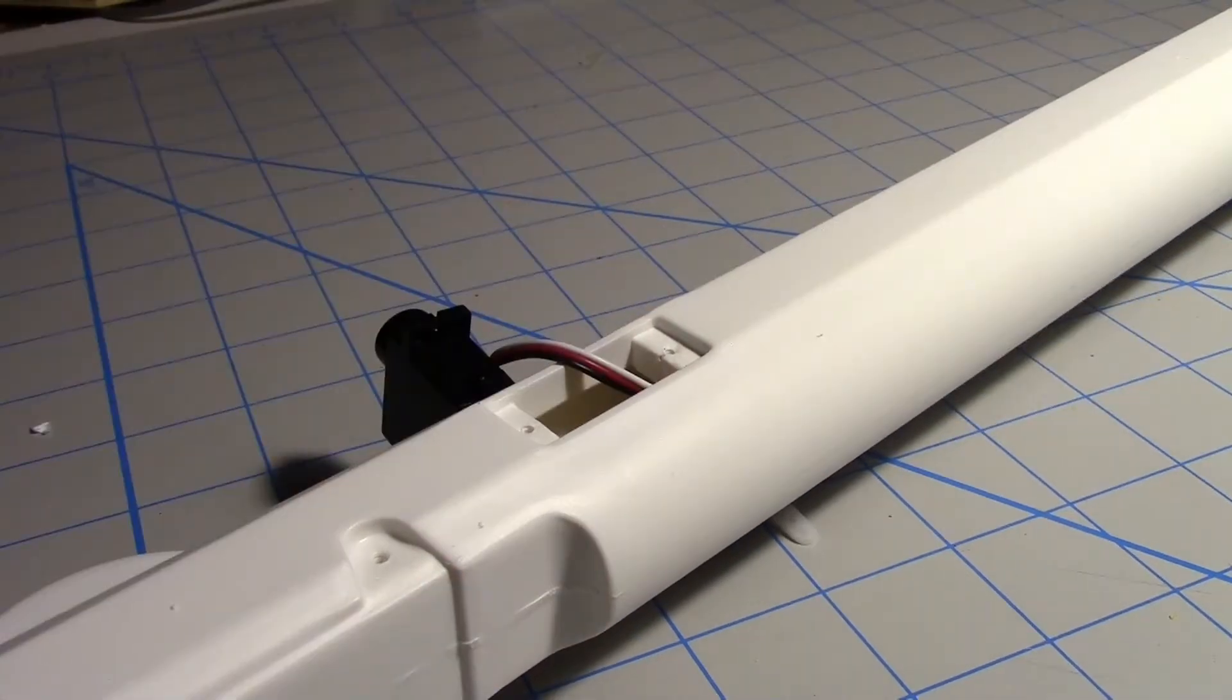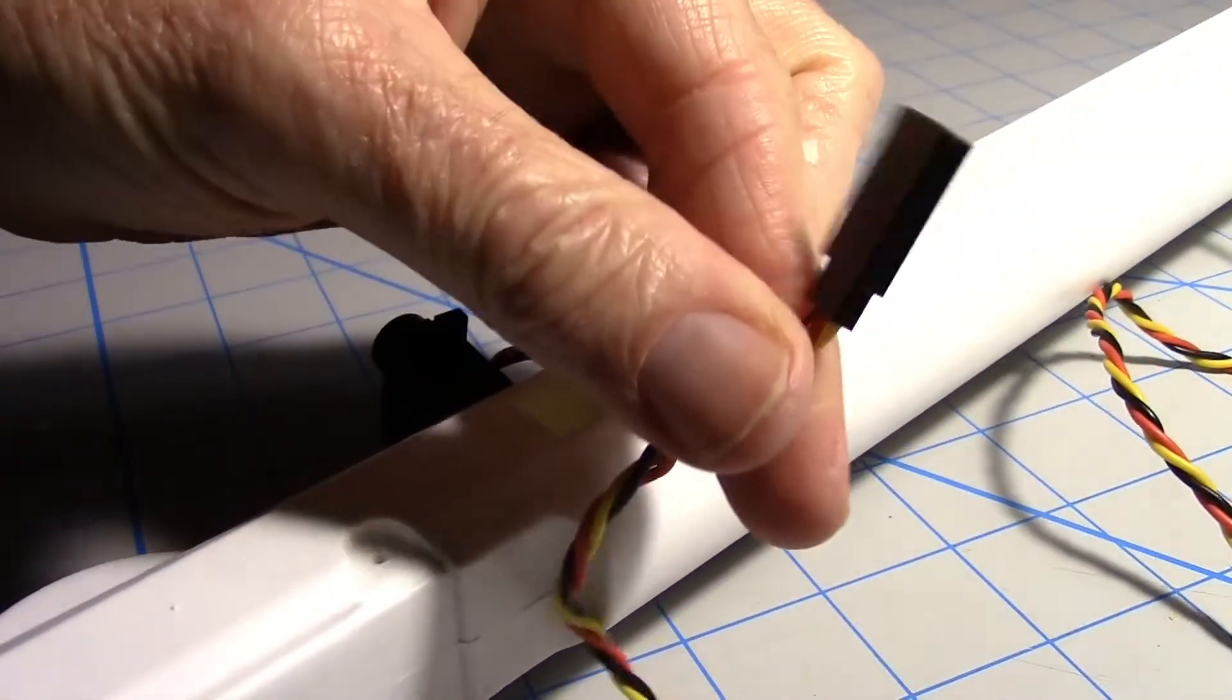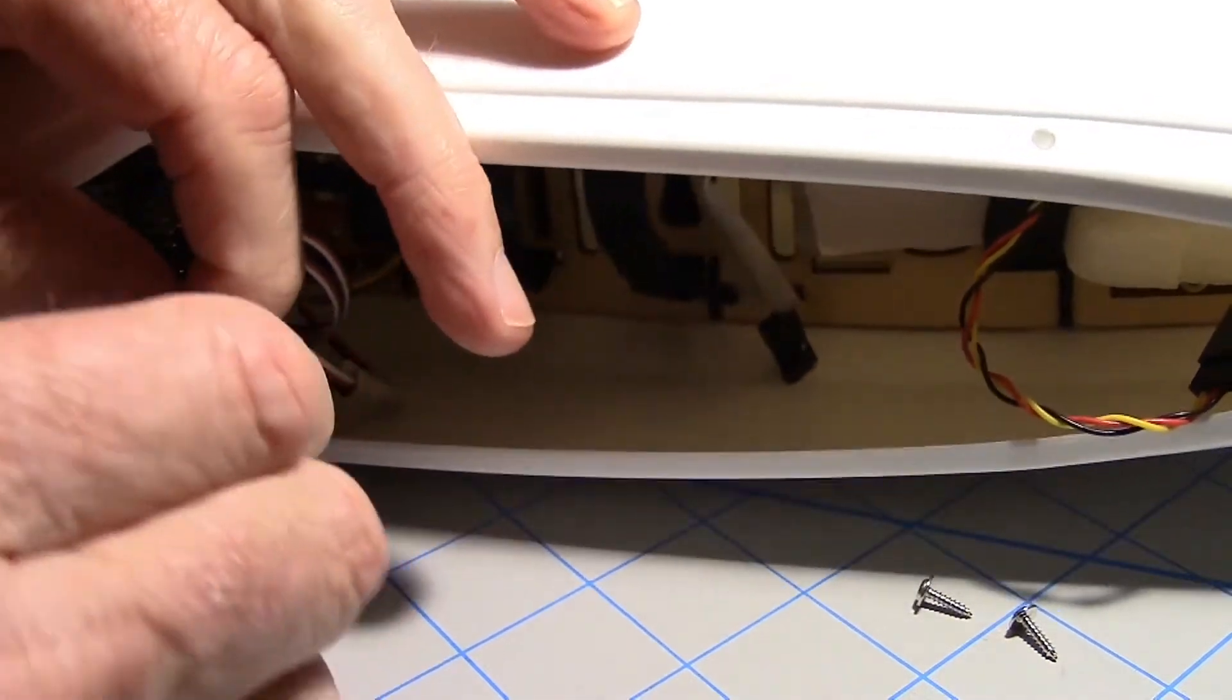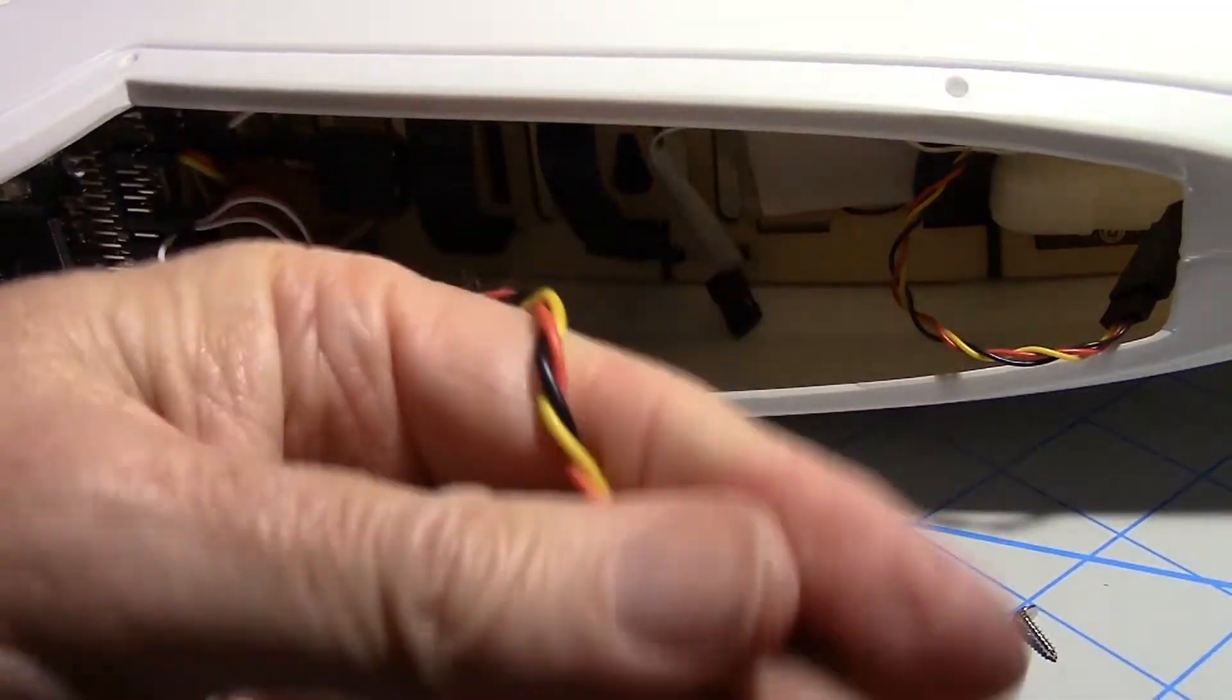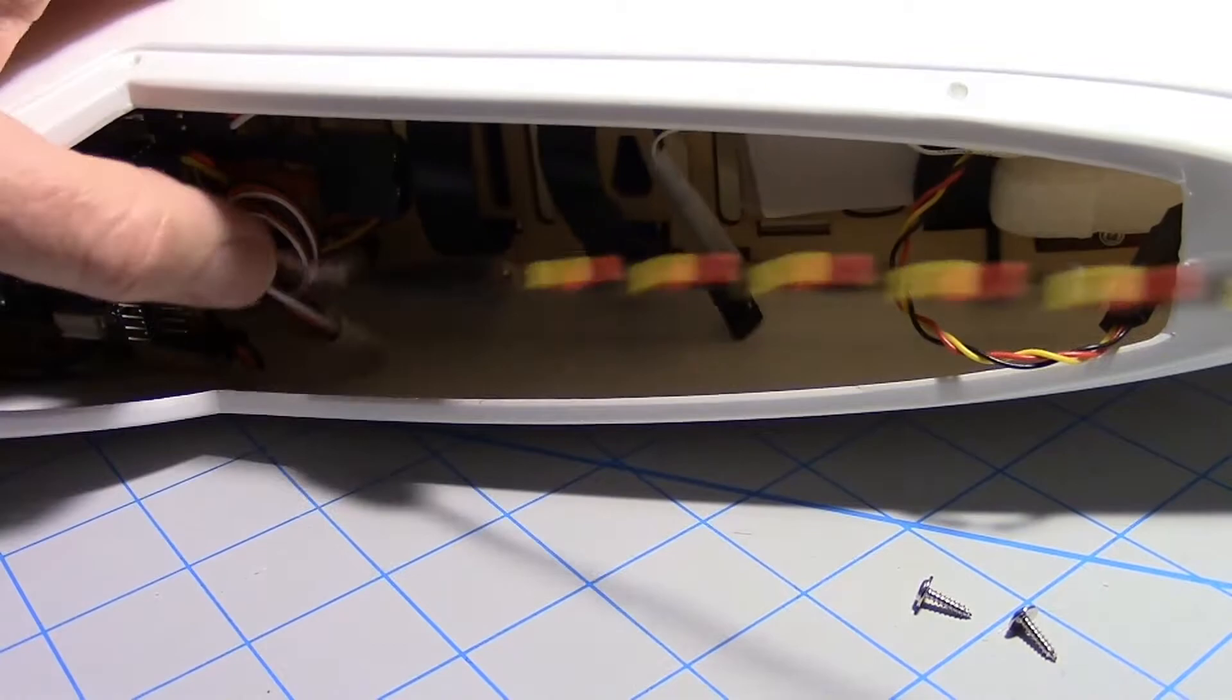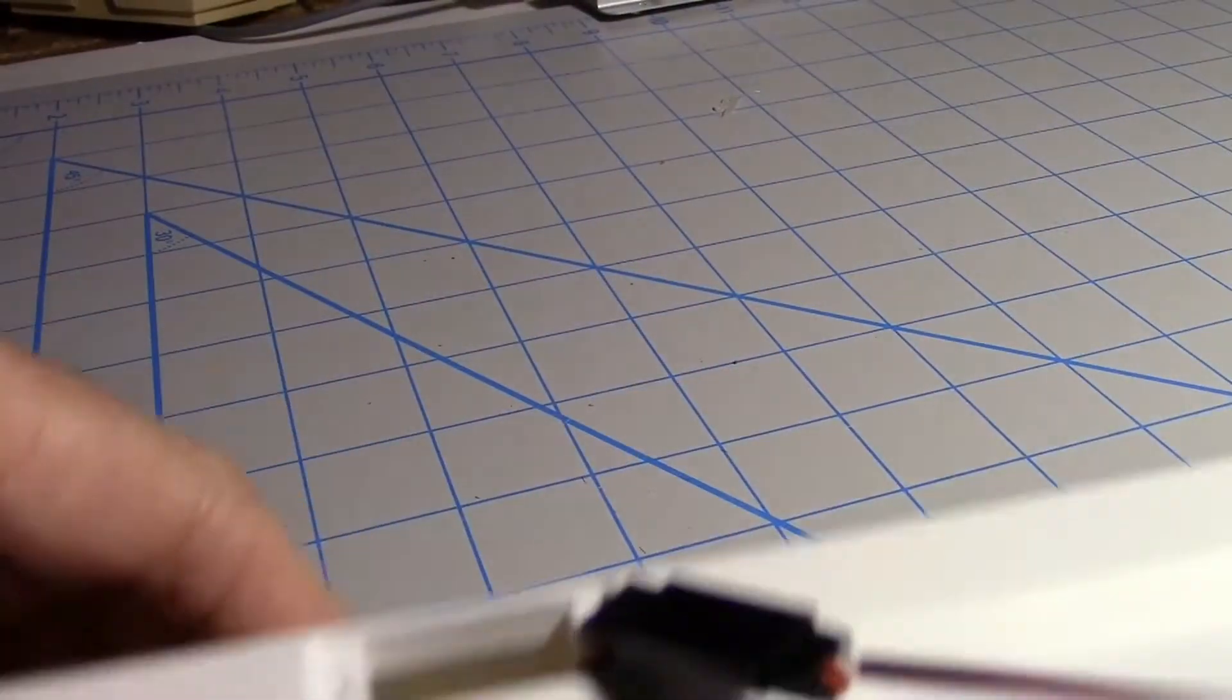I'll put an extension on the other end so I don't lose it inside the fuselage. These are really a tight fit. Now the extension's on, so when I pull it back inside I won't lose it. I hate it when I lose it.